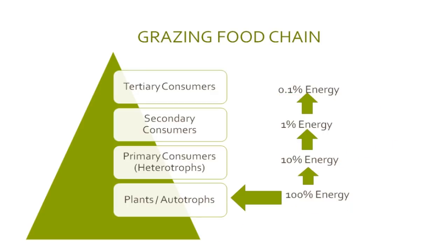Similarly, we have a grazing food chain in the aquatic ecosystem. Typical examples include phytoplanktons at the lowest trophic level, above that zooplanktons, then small fish, then large fish, and above that, of course, shark.